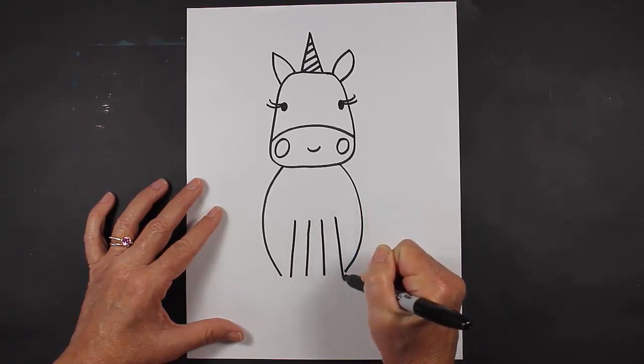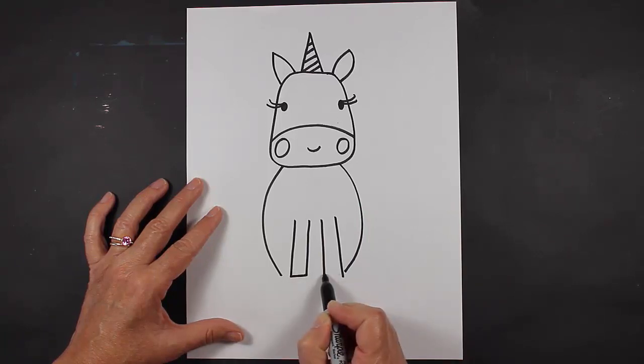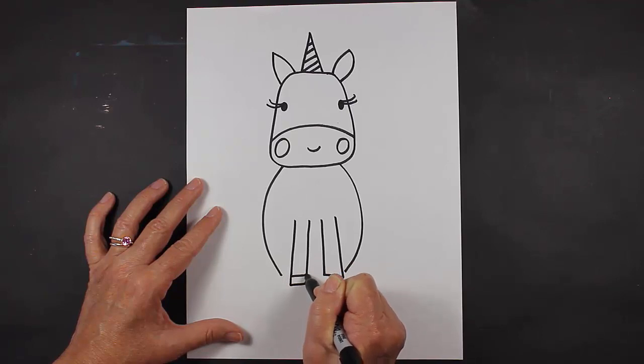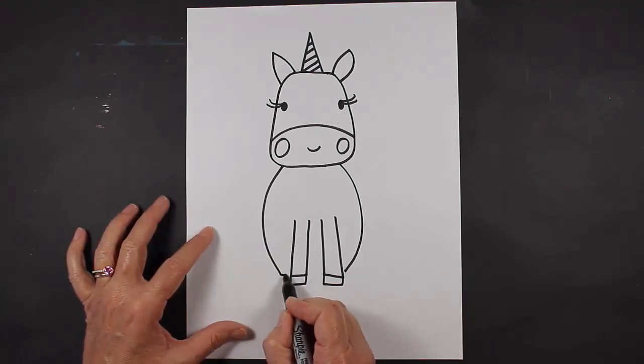At the bottom of those lines, I'm going to close them up, and then I'm going to put some small hooves at the bottom as well. Now at this point I can close this up right here at the very bottom.